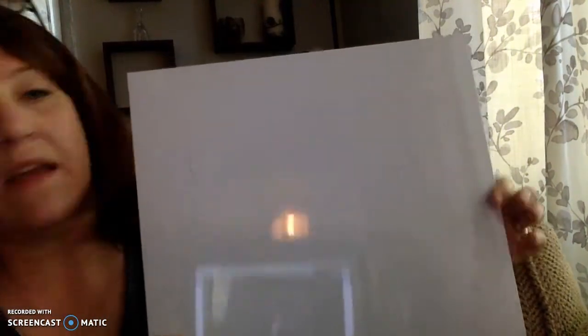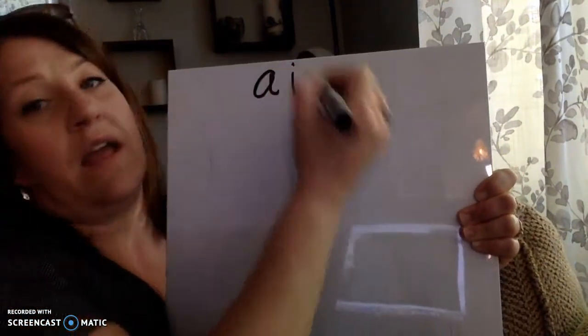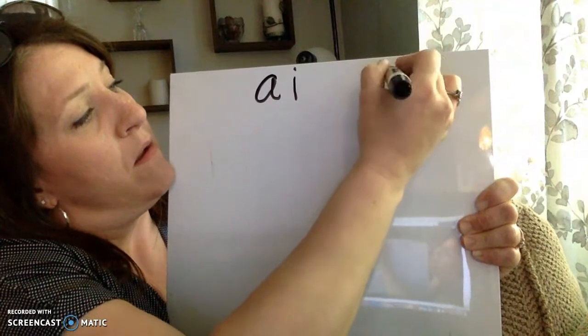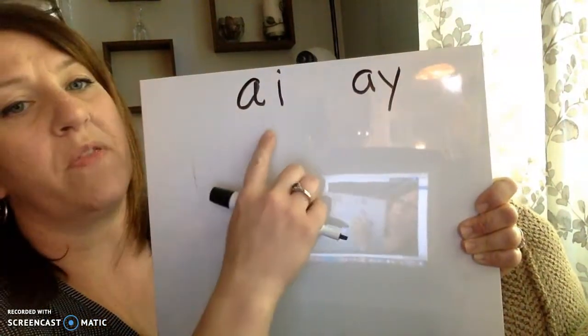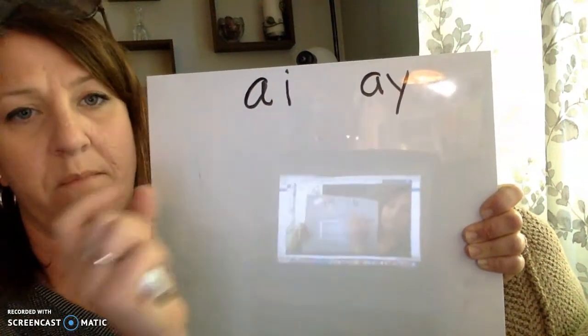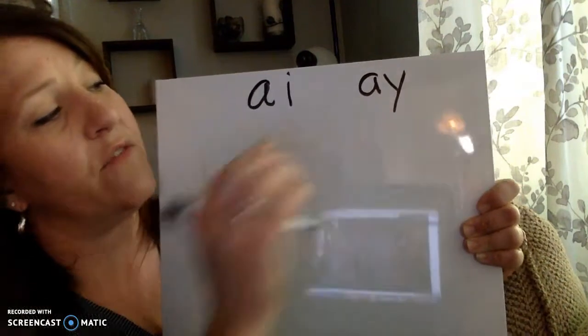All right, so let's work on, we're going to work on A-I and A-Y today. Both of these say A, but the main difference between the two is that A-I is usually found in the middle of a word, and A-Y is found at the end of a word.